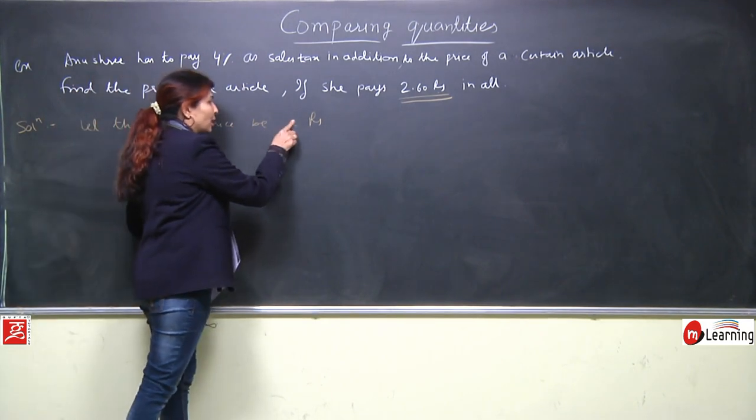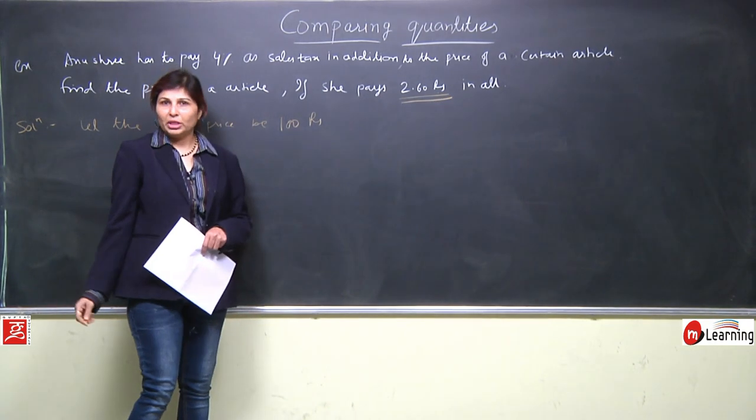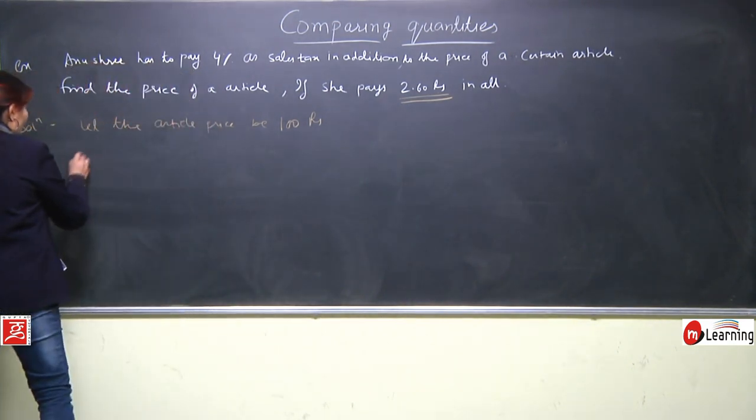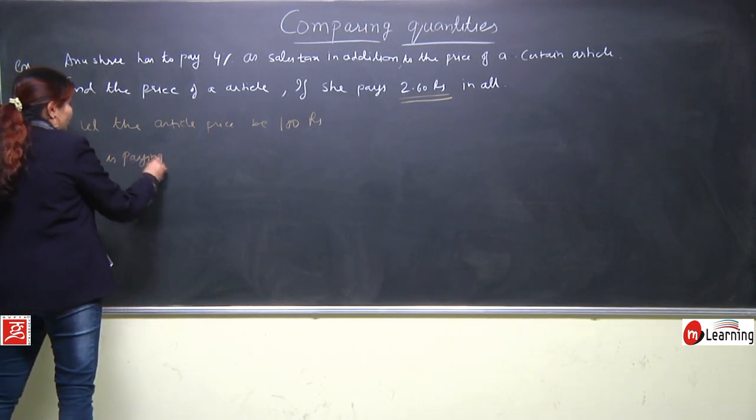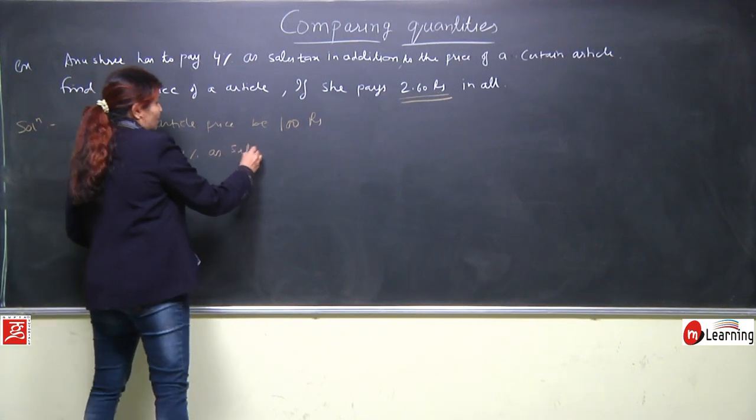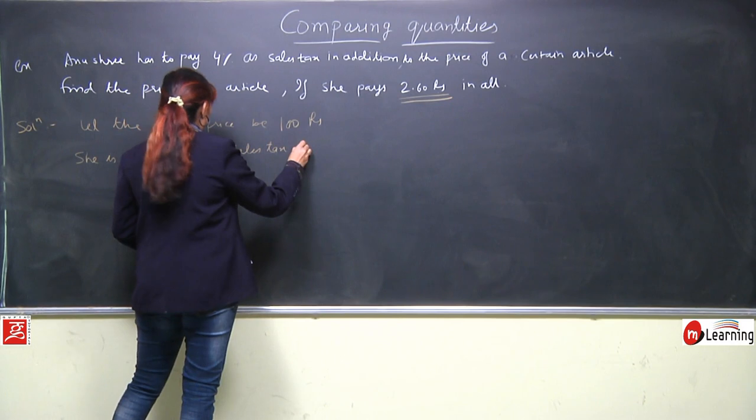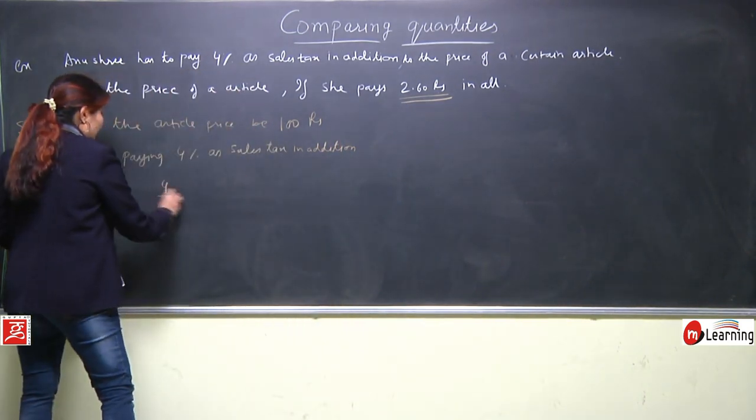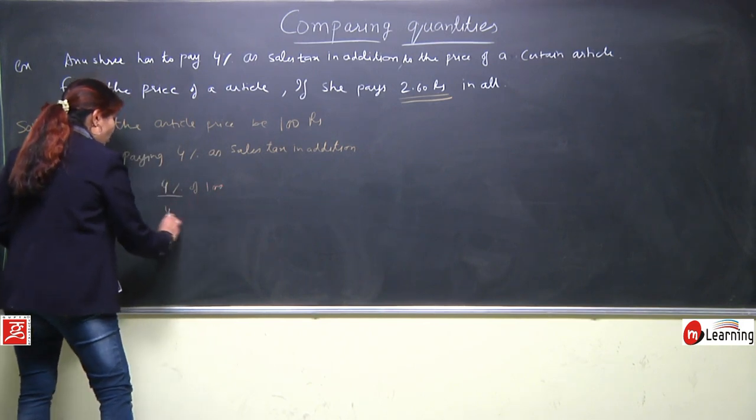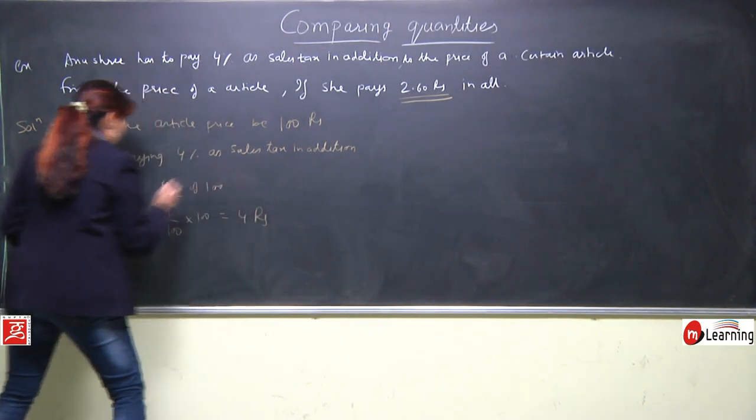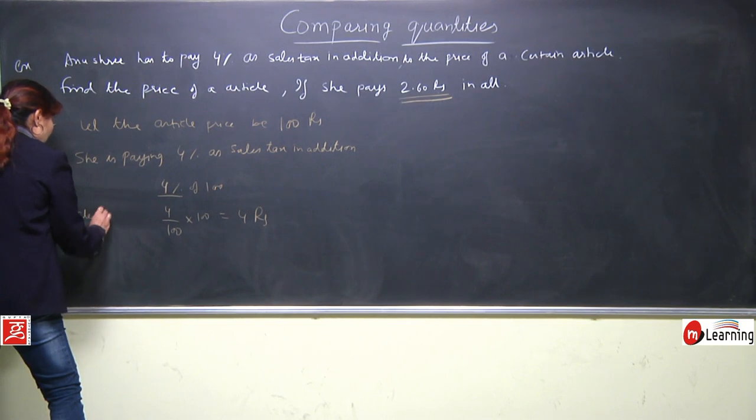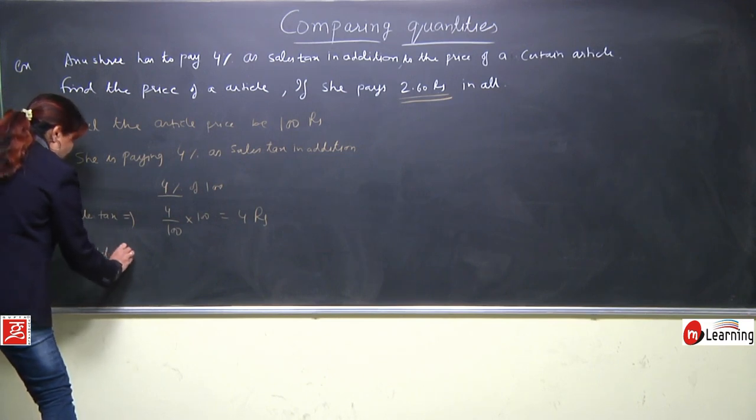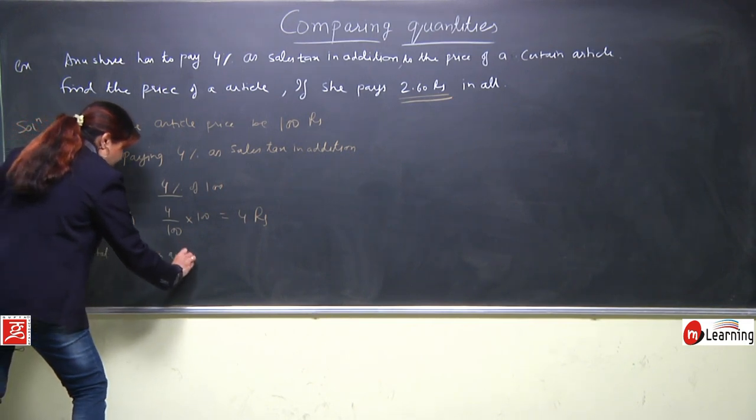Let the article price be - this is our alternate method - we will assume 100 rupees. Means Anushree is buying an article whose price is 100 rupees, which we assumed. Now she is paying 4% as sales tax in addition. She has to pay extra 4%.